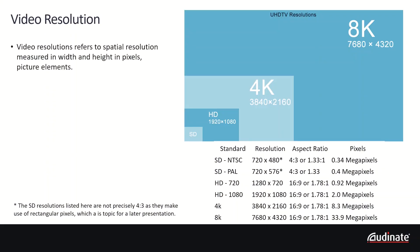Video resolution typically refers to the spatial resolution measured in width and height in pixels, or picture elements. Aspect ratio refers to the ratio of the width to the height.